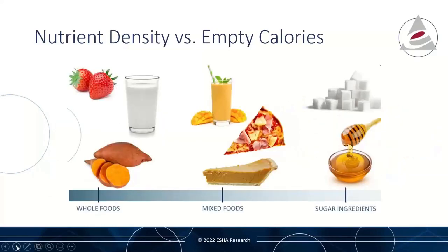The Dietary Guidelines for Americans also stress the importance of following healthy eating patterns that contain nutrient-dense foods and limit empty calories. By consuming too many empty calorie foods, we might reach our suggested calorie level before consuming foods that provide a beneficial balance of protein, fat, fiber, vitamins, and minerals. Added sugars was added to the Nutrition Facts label to help identify where foods land on the nutrient-dense versus empty calorie scale, and the percent DV for added sugars helps consumers identify and limit their intake.